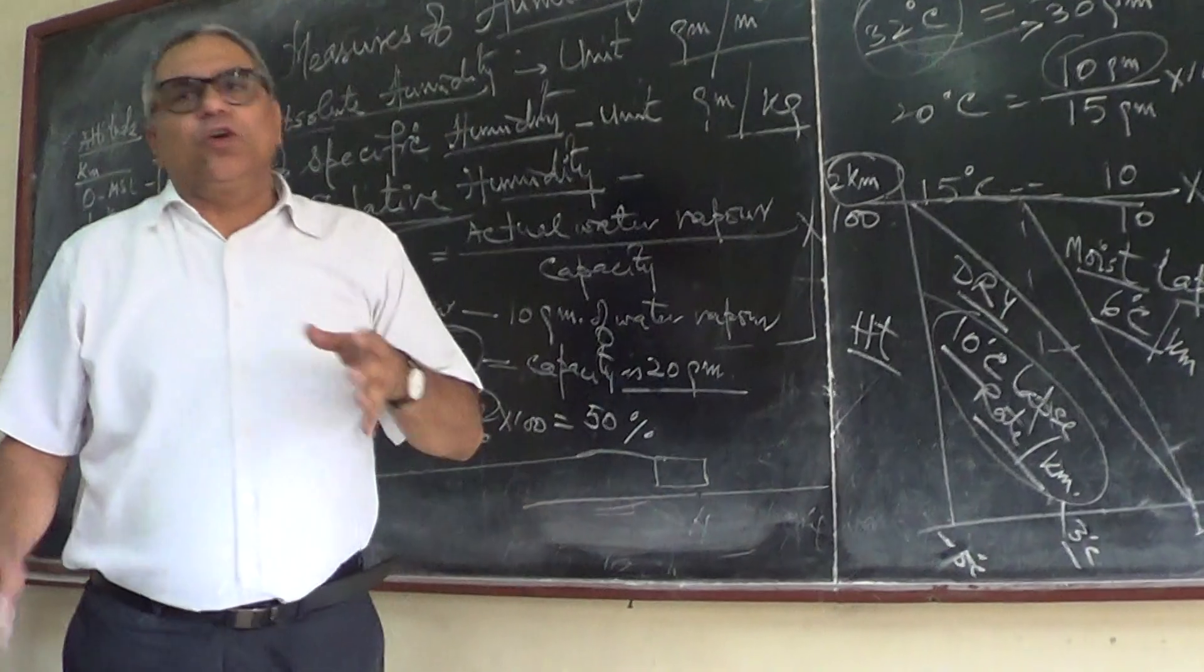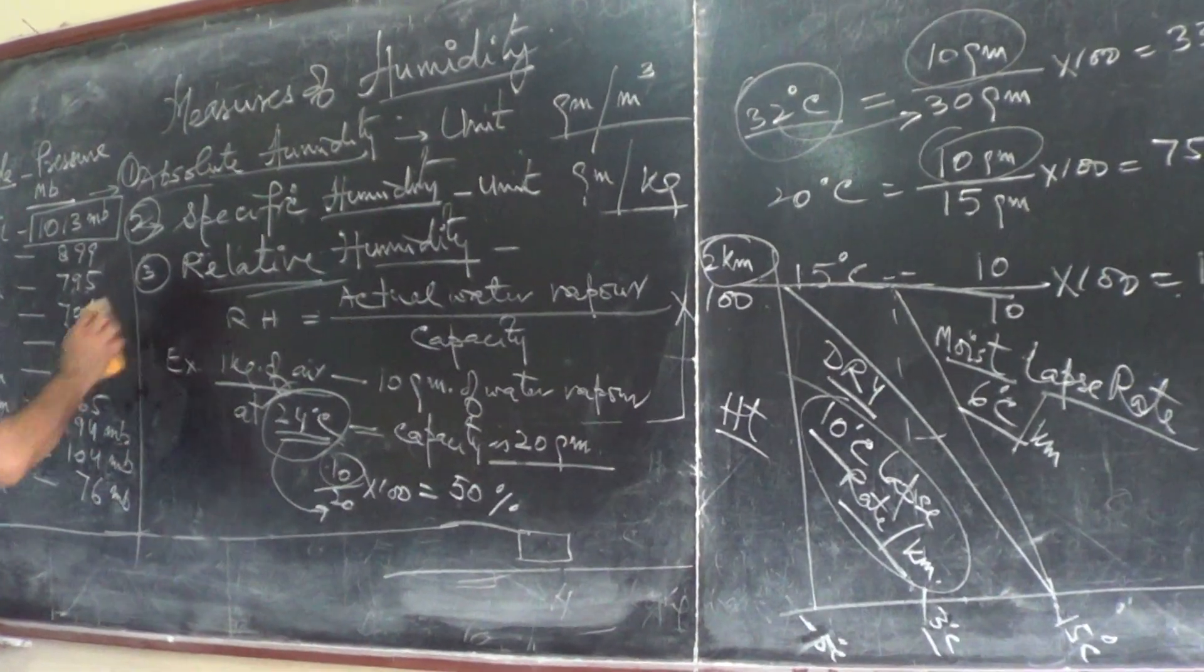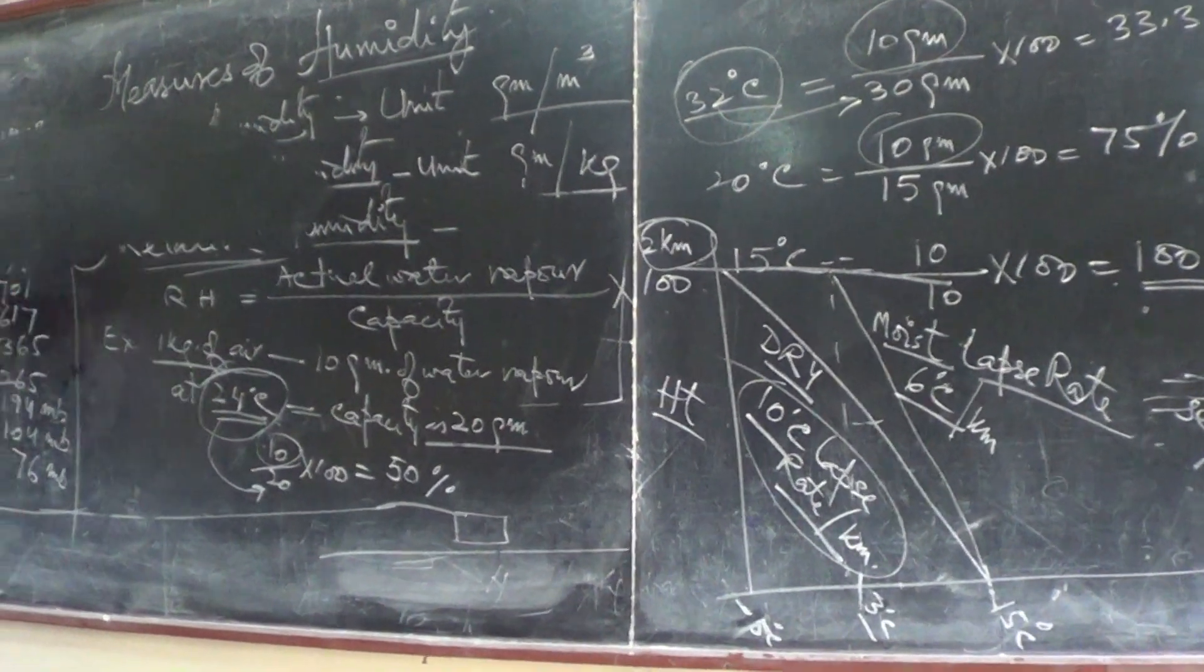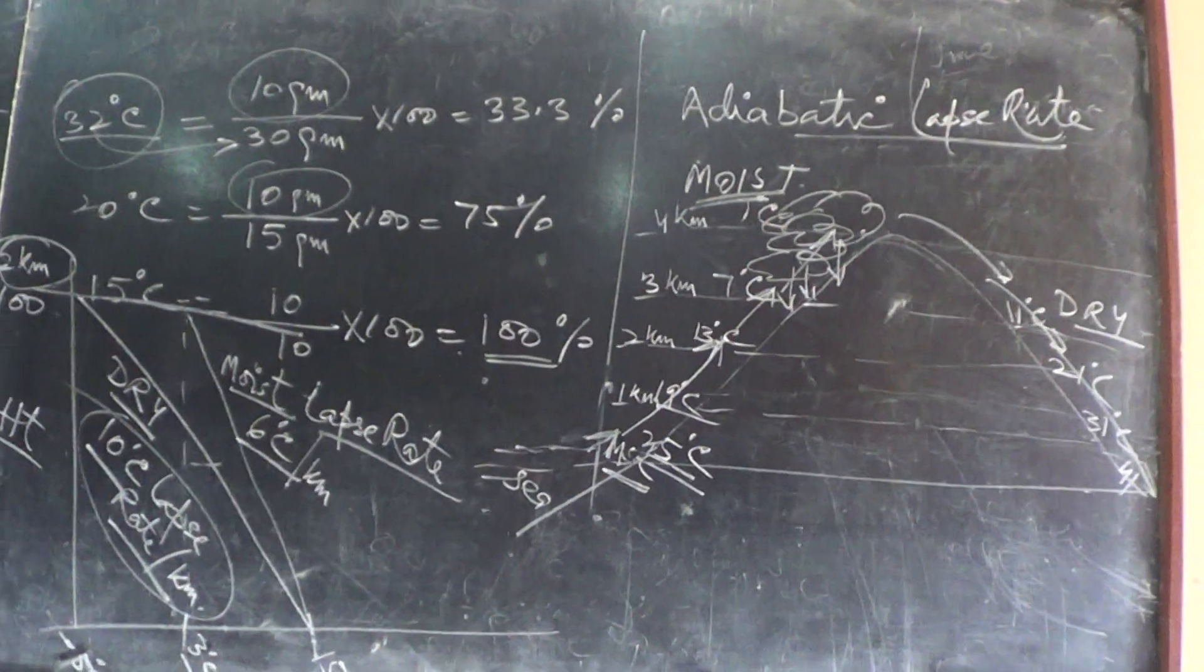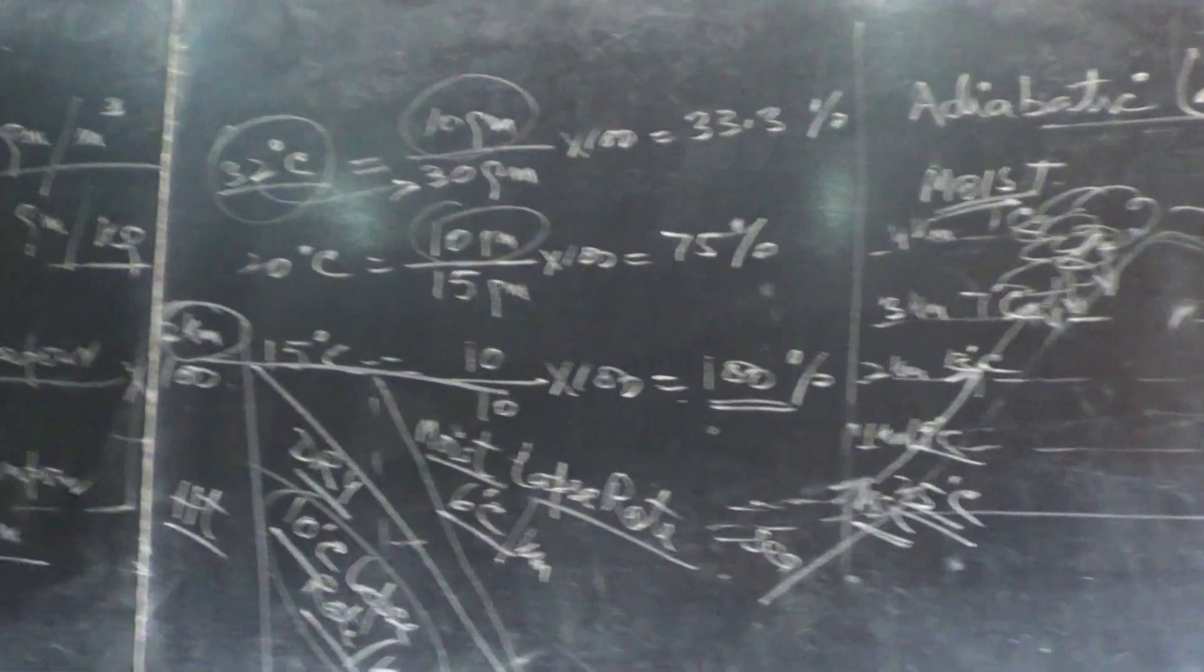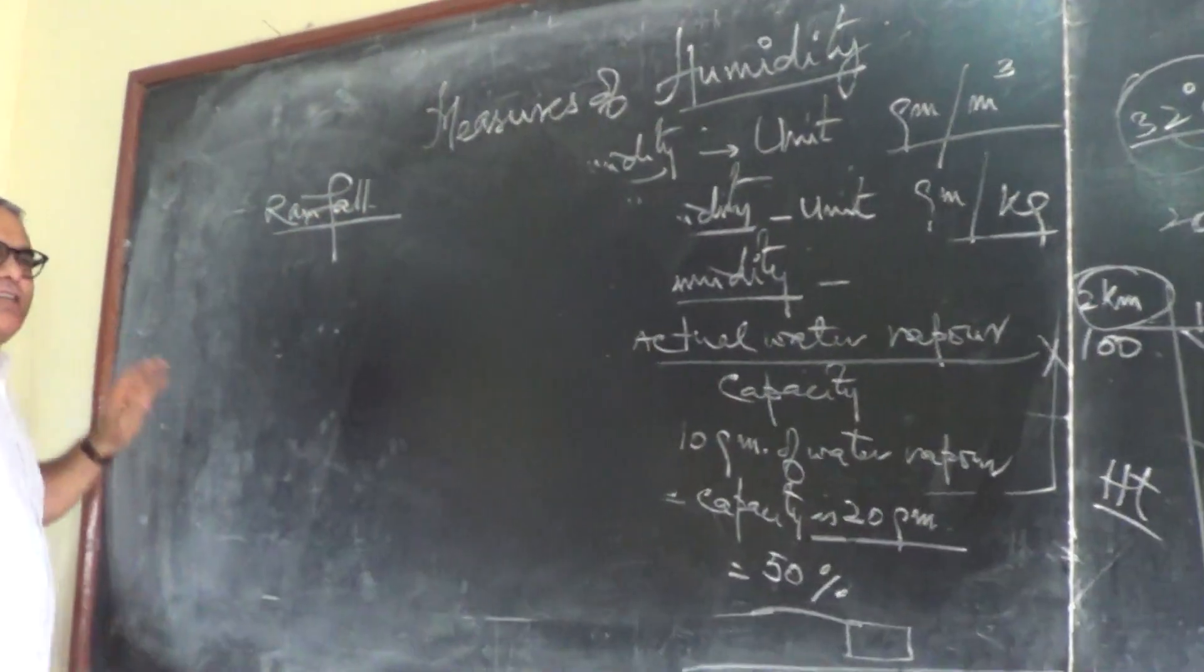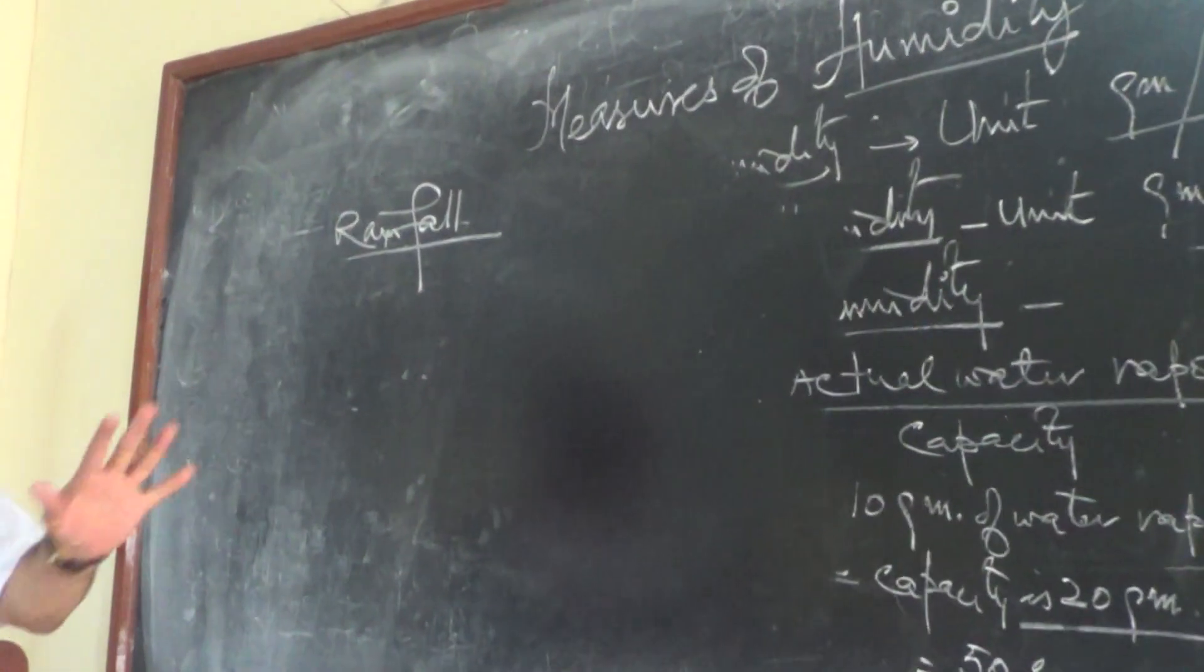At cloud formation, there are three types of rain. Rainfall, it is moisture which determines the rainfall. There are three types of rainfall.